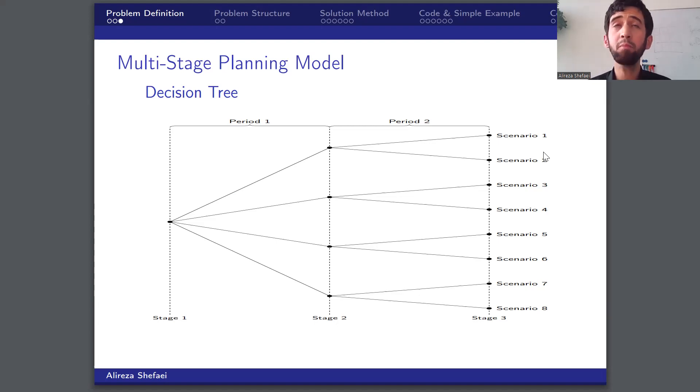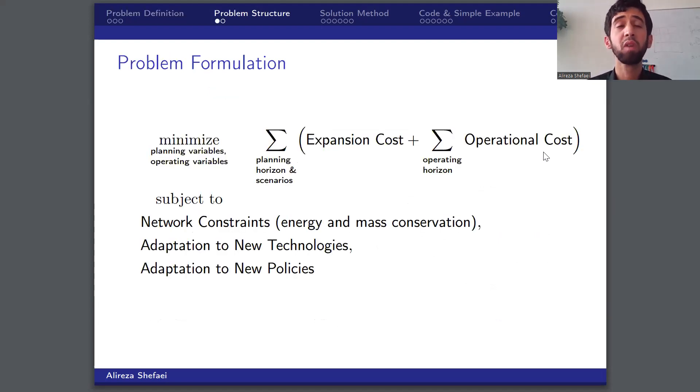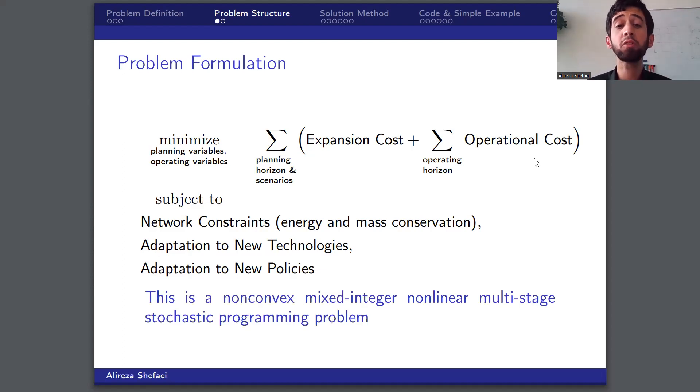The problem can be formulated as the following, in which the aim is to minimize the expansion cost over the planning horizon while minimizing the operational cost on the operating horizon for all scenarios. In the meanwhile, we should satisfy network constraints and adapt to the changing conditions around the problem. The problem is mixed-integer due to the binary nature of the planning decisions and is non-convex because of the equations governing network dynamics.